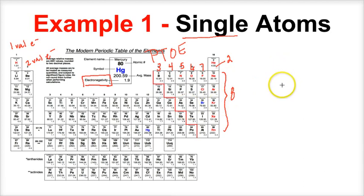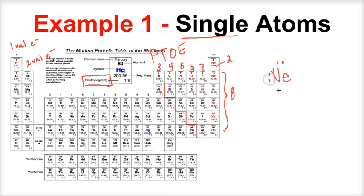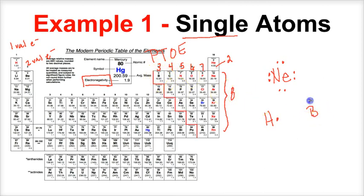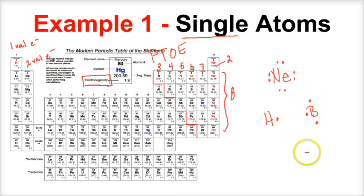Let's draw the Lewis structure for neon. Write the chemical symbol, and since neon is a noble gas with eight valence electrons, pair these up at 90-degree angles around the symbol. For hydrogen, which has one valence electron, place one dot. For boron with three valence electrons, place one dot on three sides. What I typically like to do is place one electron on each side of the atom first, then go back and pair them up.